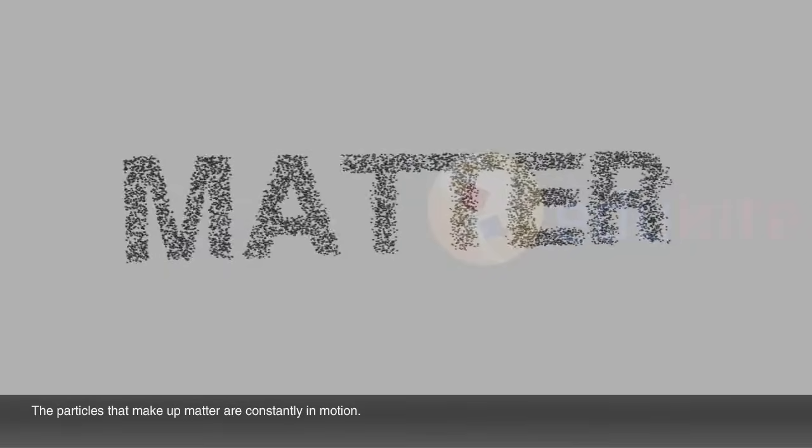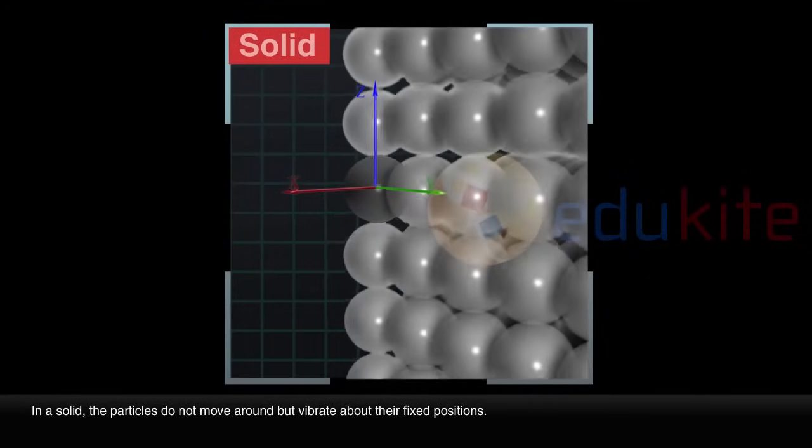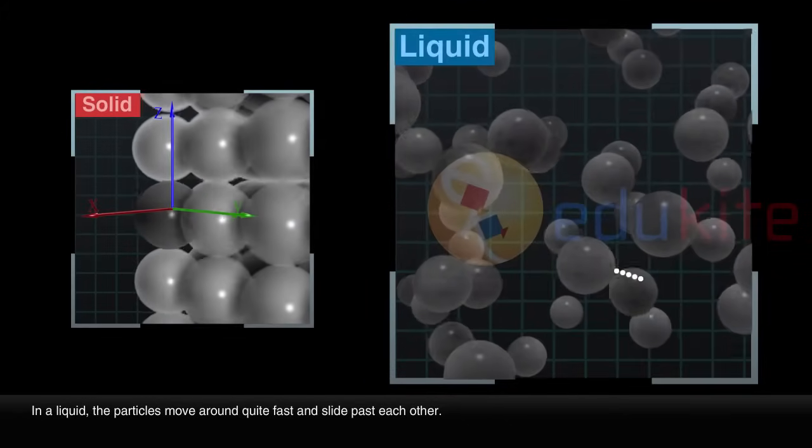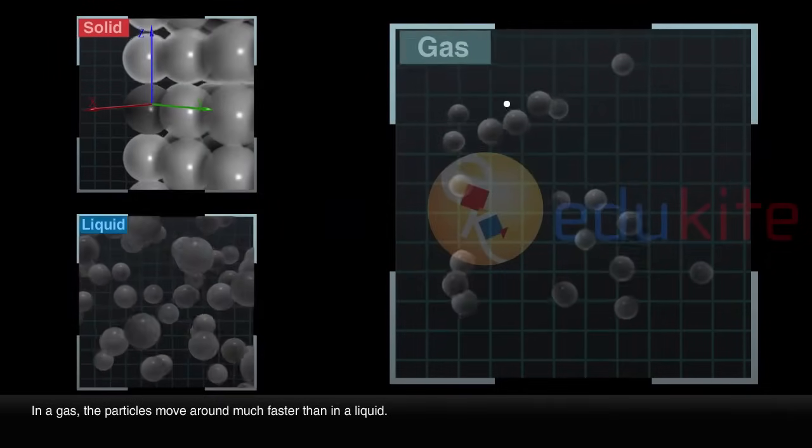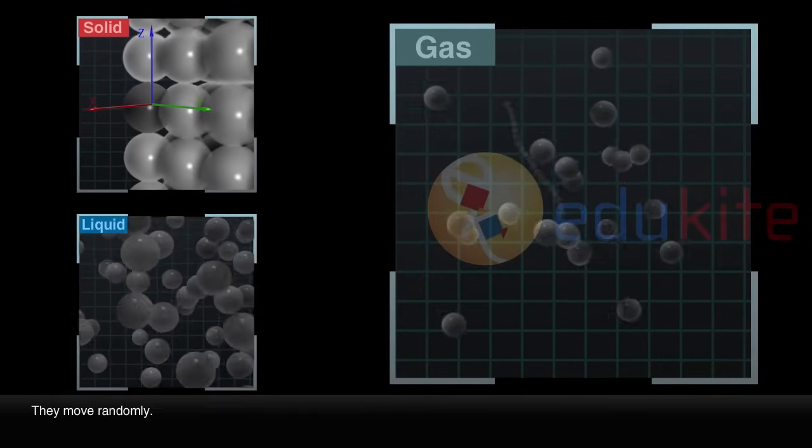The particles that make up matter are constantly in motion. In a solid, the particles do not move around but vibrate about their fixed positions. In a liquid, the particles move around quite fast and slide past each other. In a gas, the particles move around much faster than in a liquid. They move randomly.